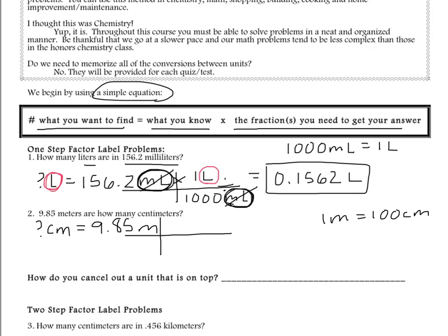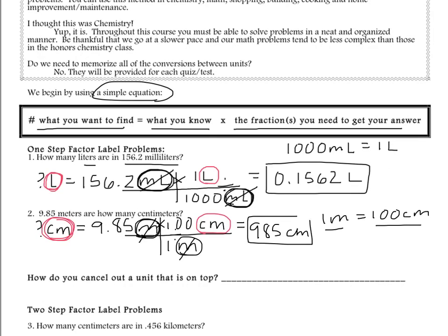Back to our problem. I have one meter and 100 centimeters. I determine which goes on the bottom of my fraction by looking at what I want to cancel — I want to cancel meters and end up in centimeters. So I put the one meter on the bottom and 100 centimeters on the top. Now meters cancel on top and bottom, the only units remaining are centimeters, and I'm ready to solve. Numbers across the top get multiplied: 9.85 times 100, divided by one, giving a final answer of 985 centimeters.